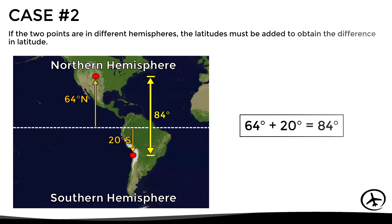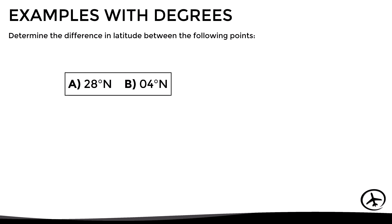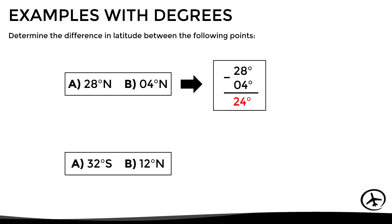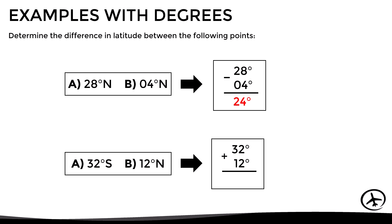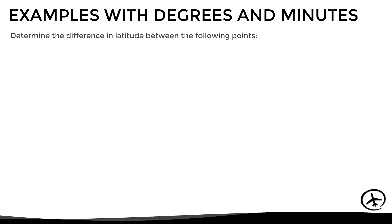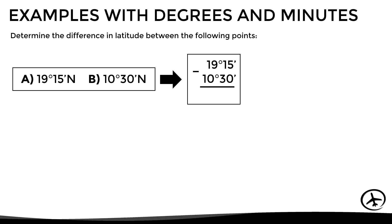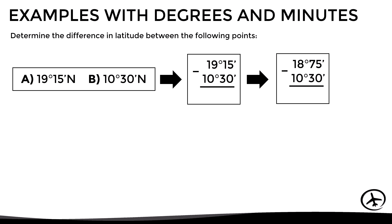Let's look at some examples. In this first case both points are in the northern hemisphere, so we just subtract the latitudes and obtain a difference in latitude of 24 degrees. In the second case the points are in different hemispheres, so we just add the latitudes to obtain a difference in latitude of 44 degrees. Up to this point we have only used degrees for the examples. Let's see how to do this operation with degrees and minutes. Since both points are in the same hemisphere, we just subtract the latitudes. However, subtracting 15 minus 30 can be difficult if done manually, so it is better to convert one of the degrees into minutes, so that we now have 18 degrees and 75 minutes instead of 19 degrees and 15 minutes. This way the operation is much easier, and we obtain a difference in latitude of 8 degrees and 45 minutes.